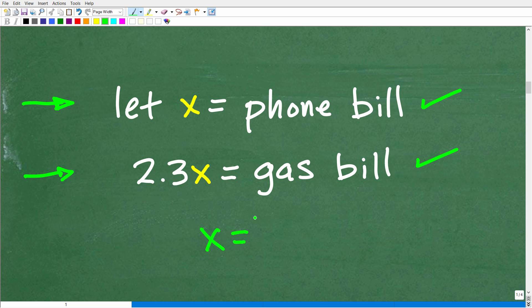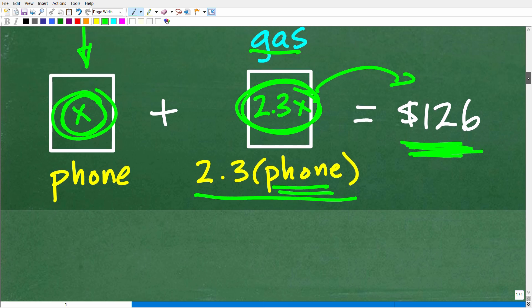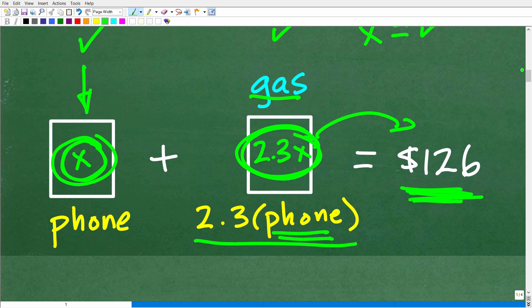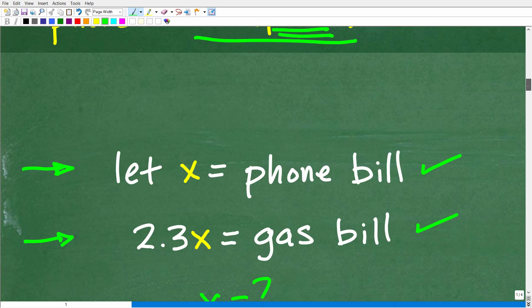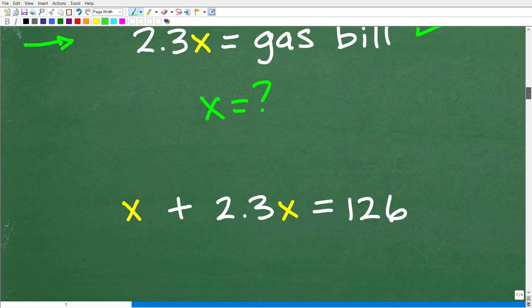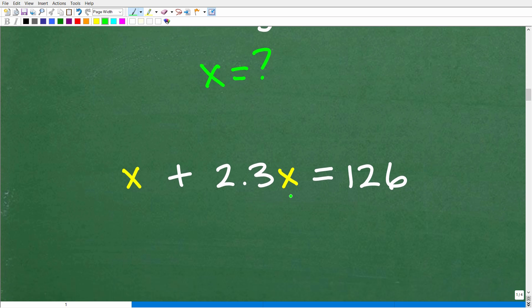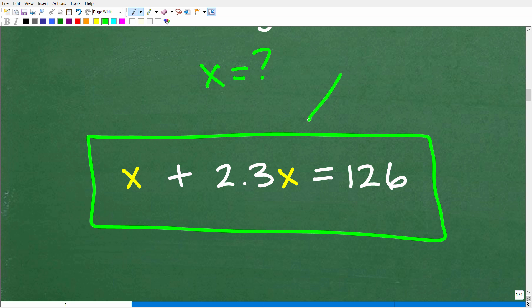Okay, so to solve for x, we need to construct an equation. So you can see right here, I pretty much gave you that equation. So x plus 2.3x is equal to 126. But we want to write it out like so. Alright, so x plus 2.3x is equal to 126. So if we could solve this basic linear equation for x, we can answer the question.